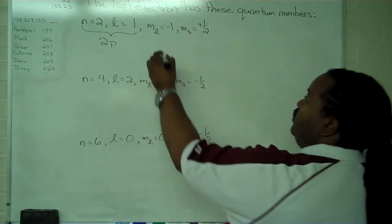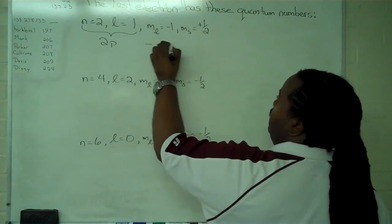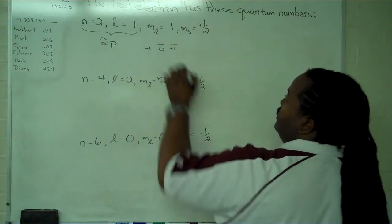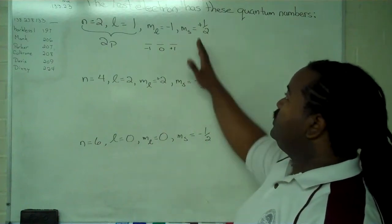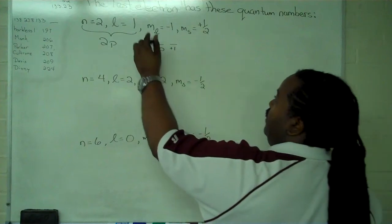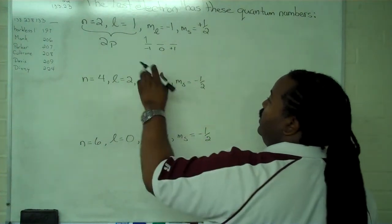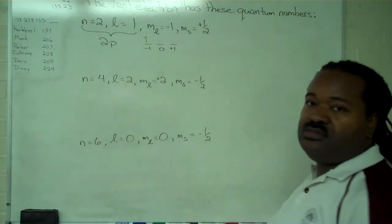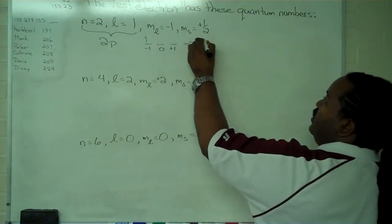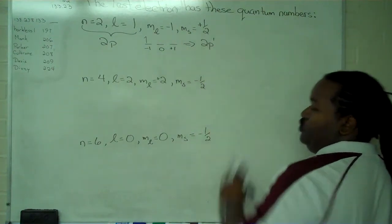Because we know it's a 2p, we can immediately write the three sub orbitals, minus 1, 0, plus 1. And we see that the last electron is a spin up in the minus 1. And we would backfill everything else. There's nothing left to do. And so this tells us that the last thing we have is a 2p1.